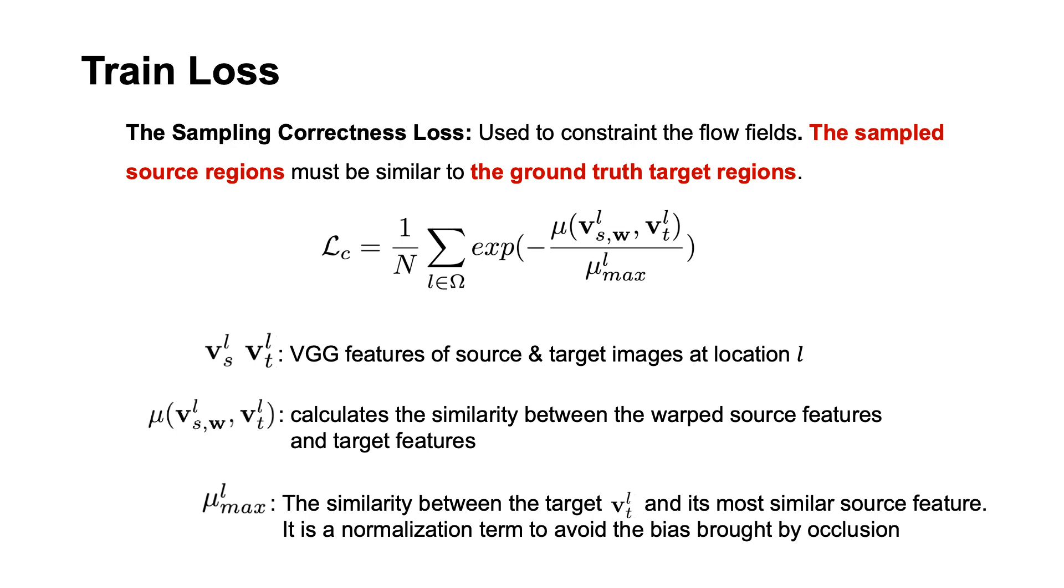Let VSL and VTL represent the source and target VGG features at location L. The function mu calculates the cosine similarity between the warped source features and target features. Mu max is a normalization term. It represents the similarity between the target feature and its most similar source feature. Therefore, the loss calculates the normalized similarity between the warped sources and targets.